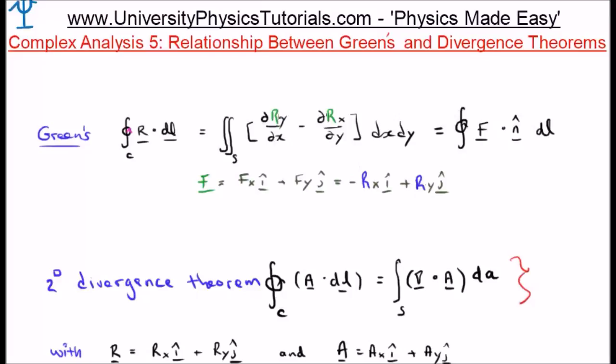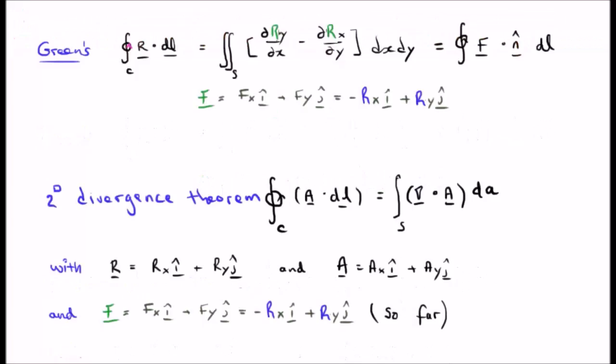Let's remind ourselves what the two-dimensional divergence theorem was. The closed line integral of a dot dl is the surface integral of the divergence of a. At the bottom of your screen I've defined a to be a sub x i-hat and a sub y j-hat. You might think I'm being overly pedantic with these definitions, but it's something I found I needed to do when deriving this, so perhaps you might find it useful.